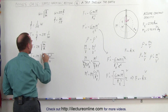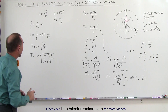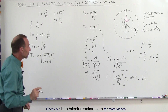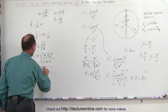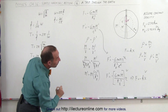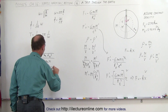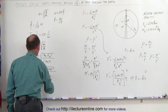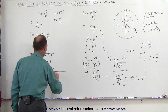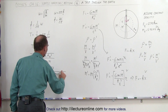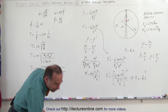Notice that the mass of the object disappears, so it doesn't matter how heavy the transport object is. The period T equals 2 pi times the square root of the radius of the earth cubed divided by G times the mass of the earth. Plugging in numbers: the radius is 6,378,000 meters, G is 6.67 times 10 to the minus 11, and the mass of the earth is 5.98 times 10 to the 24 kilograms — all inside the radical, multiplied by 2 pi.